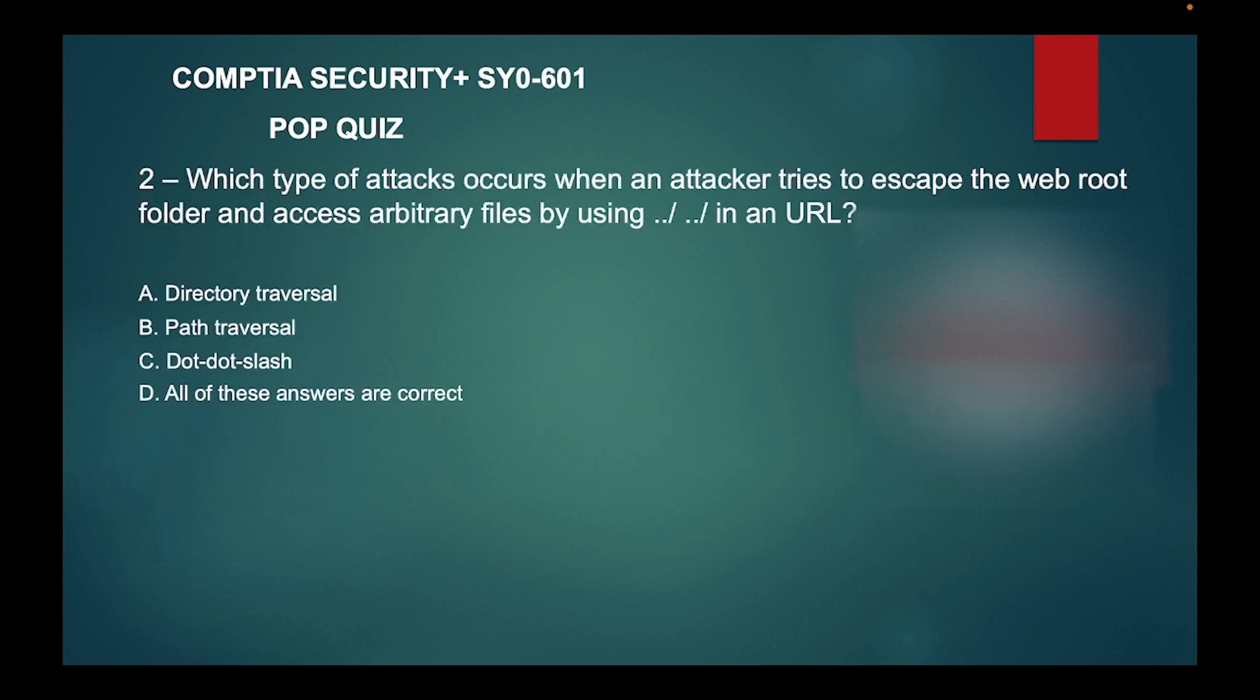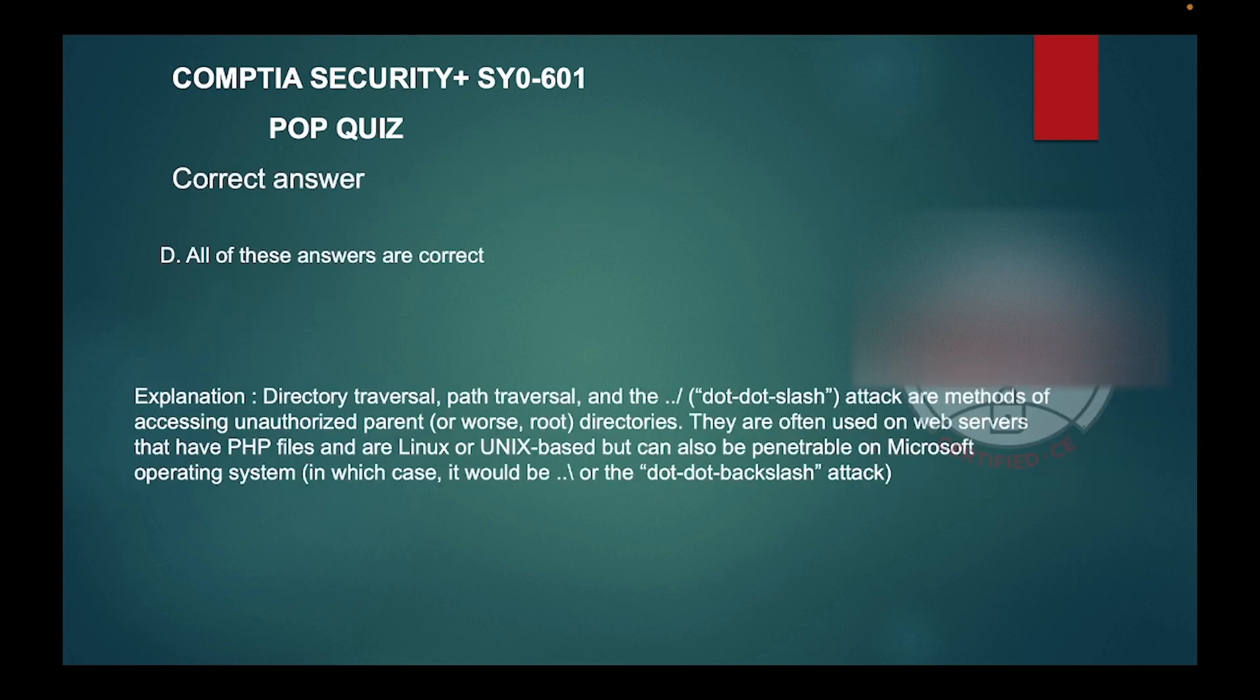Question two: which type of attack occurs when an attacker tries to escape the web root folder and access arbitrary files by using dot dot slash in a URL? Is it A: Directory traversal, B: Path traversal, C: Dot dot slash, or D: All of these answers are correct?